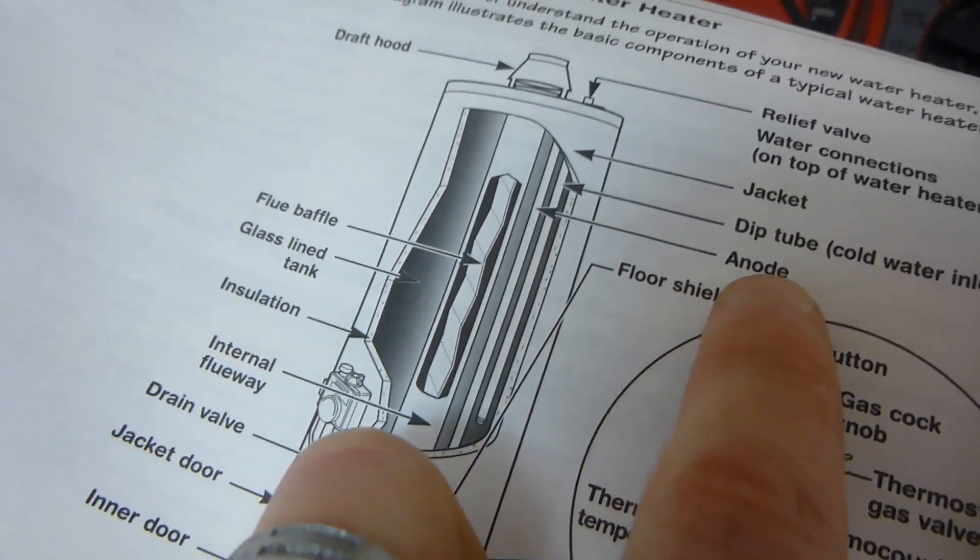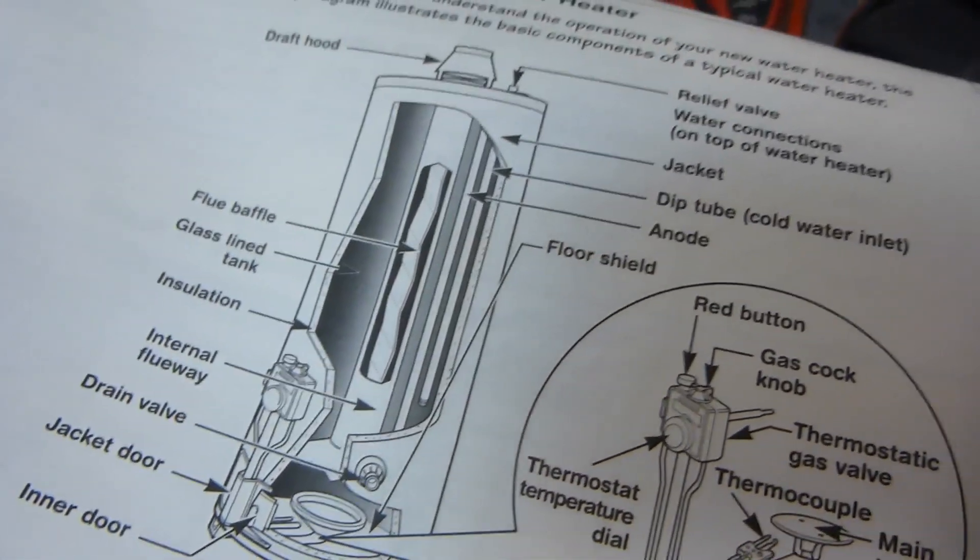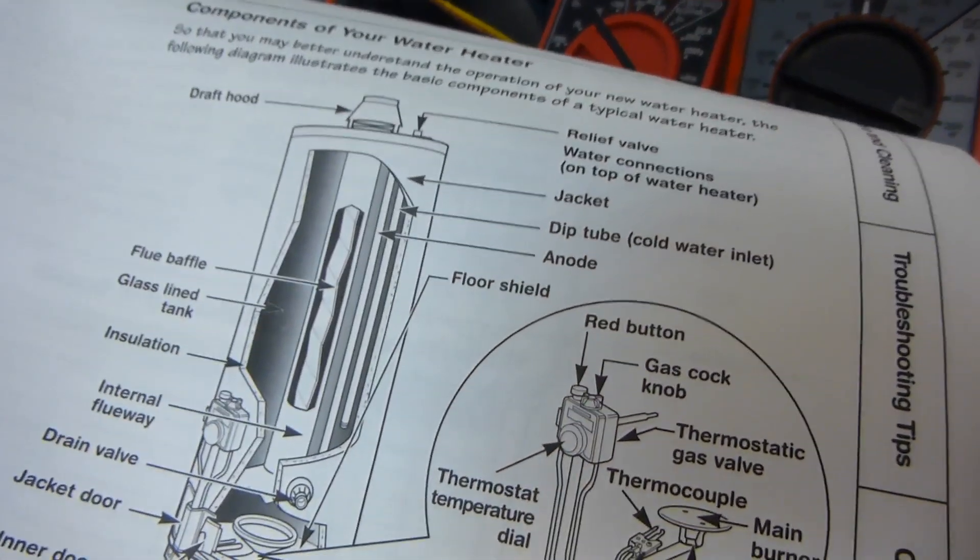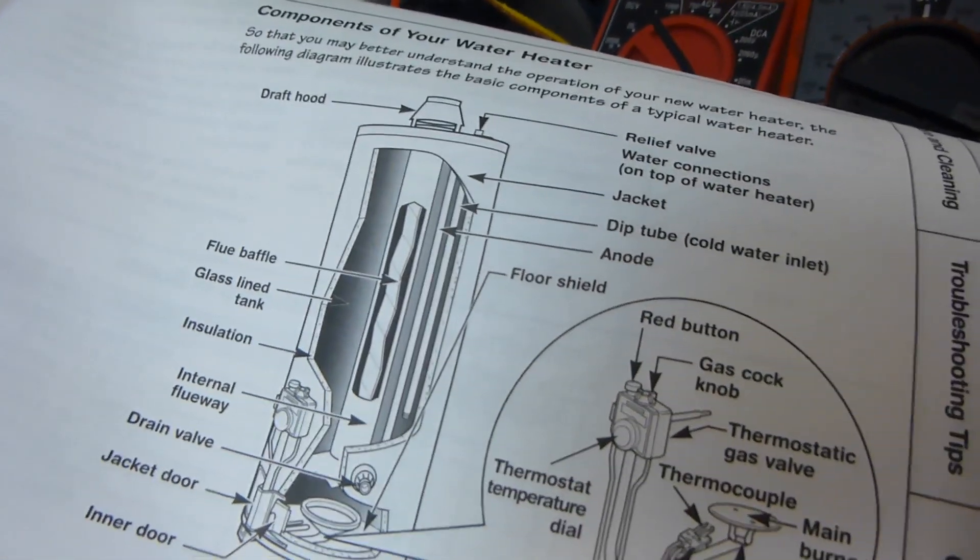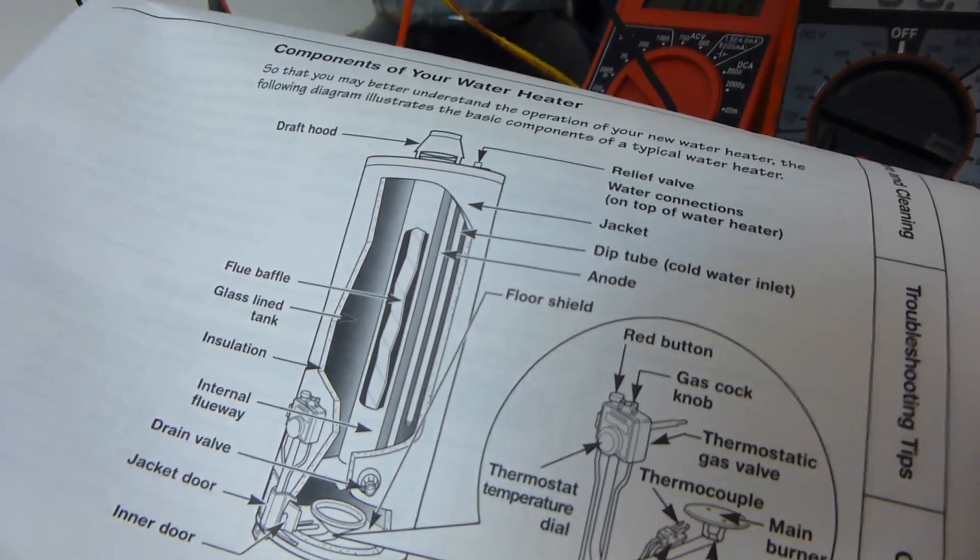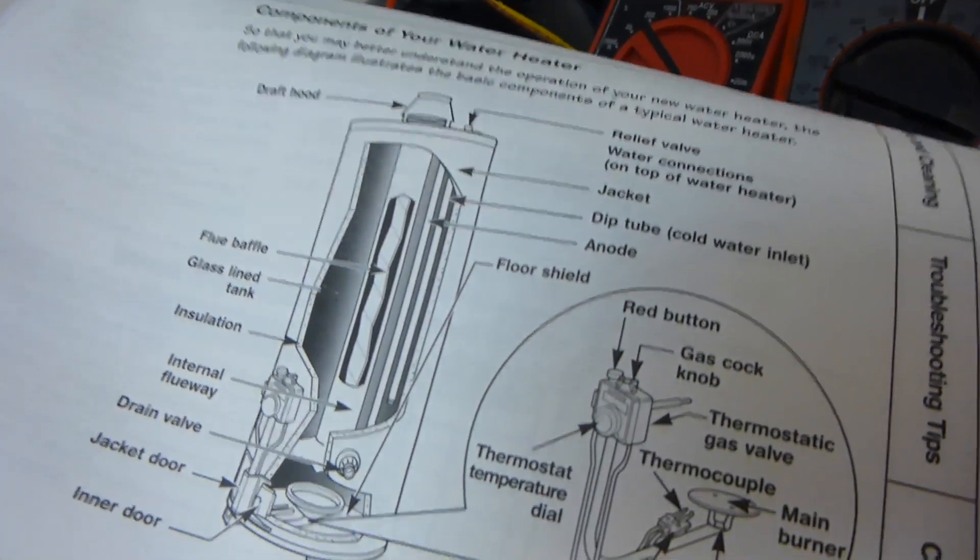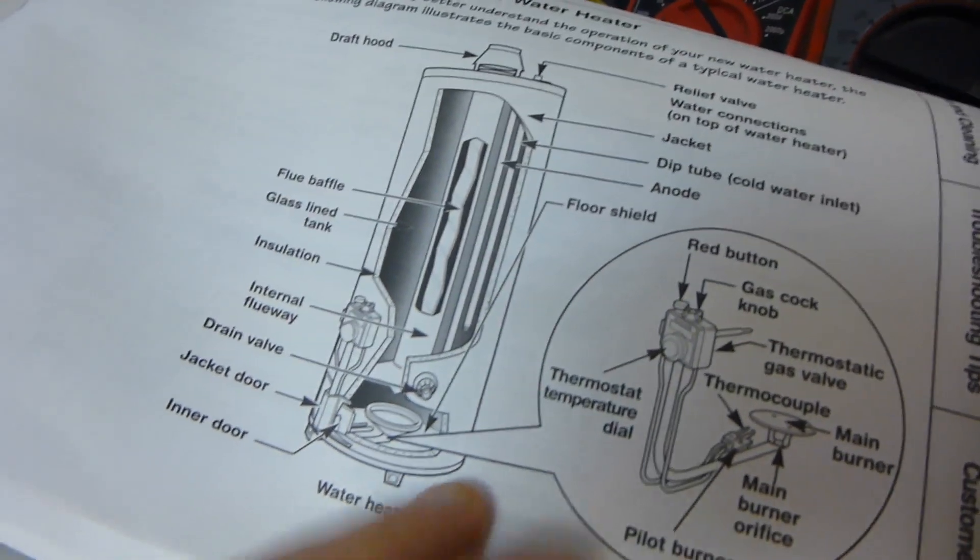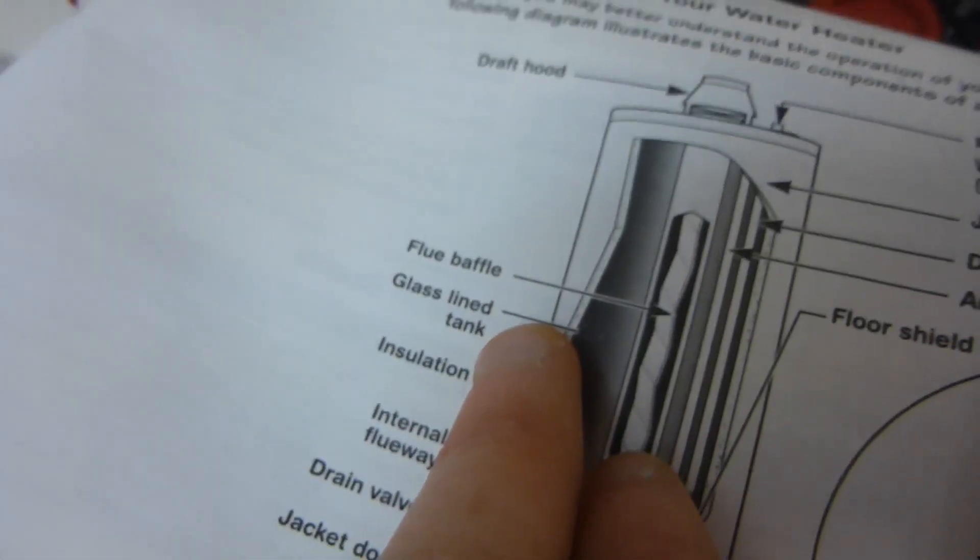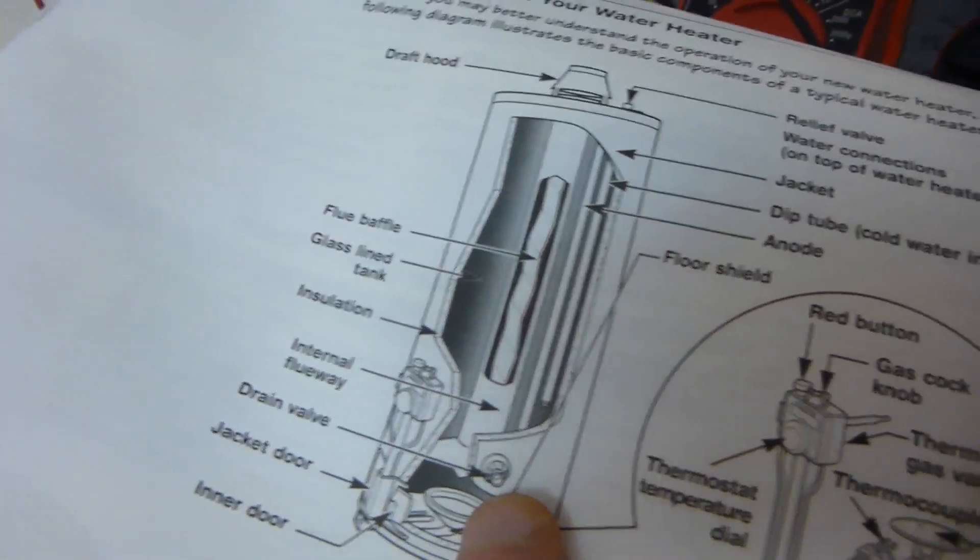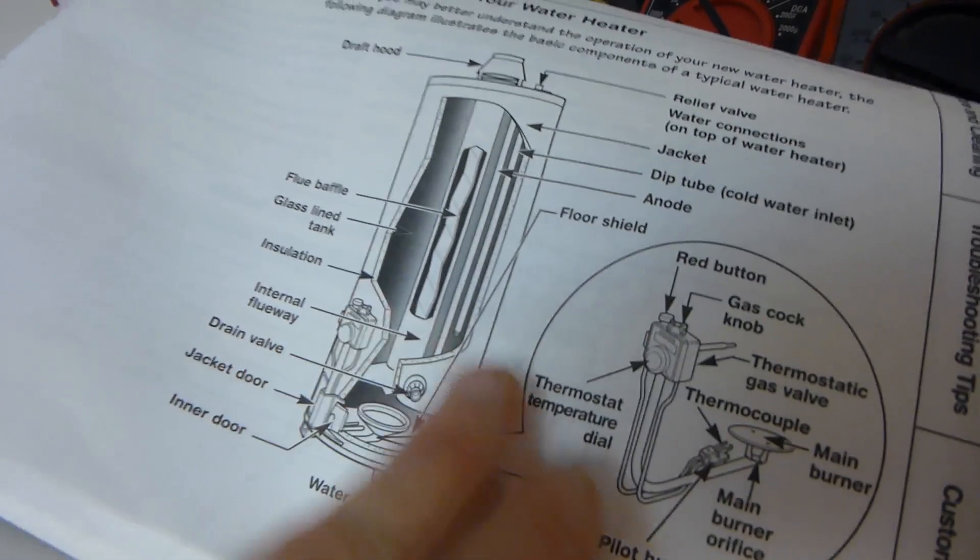And then there's actually a sacrificial anode. Right here. Which is probably zinc or magnesium or something like that. We actually tried to replace that. But since it was so stuck in there. Because it's rusted. Because it's a twenty five or so year old hot water heater. And it was never replaced. You're supposed to replace them every ten years or something like that.